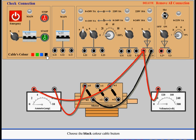Choose the black color cable button. Connect L1 negative to the negative terminal of M meter.